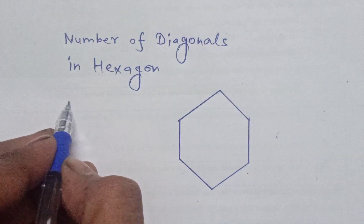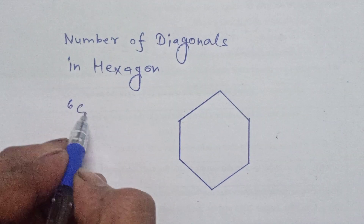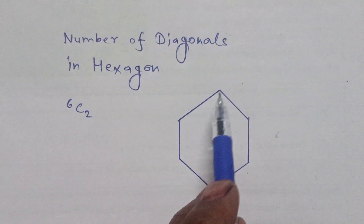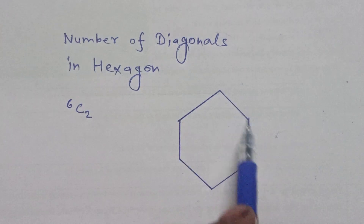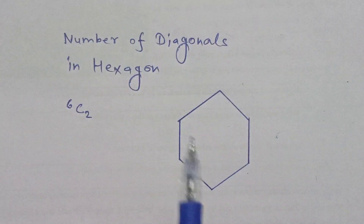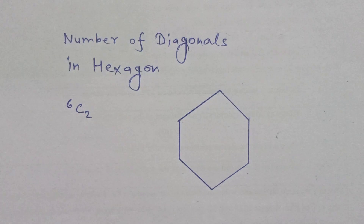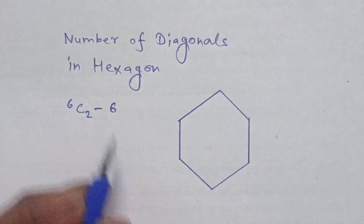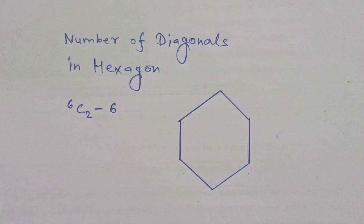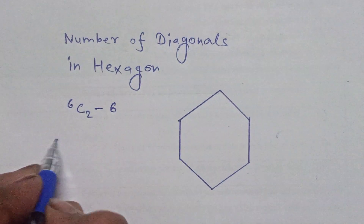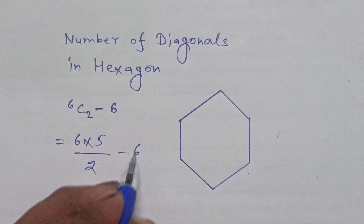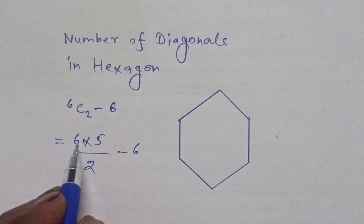So the number of combinations will be 6C2. We know that the six sides of a hexagon are not diagonals, so we subtract 6 from 6C2 to get the number of diagonals.